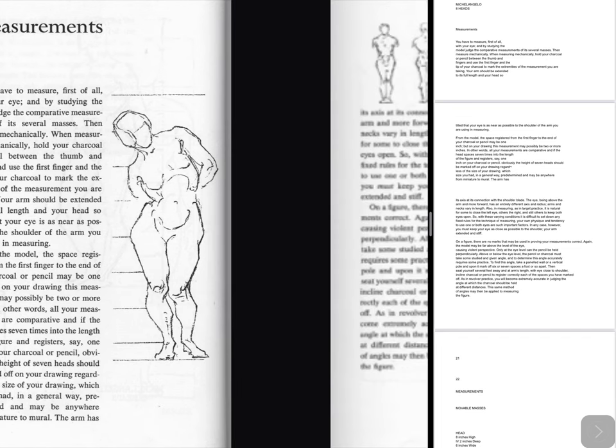The arm has its axis at its connection with the shoulder blade. The eye, being above the arm and more forward, has an entirely different axis and radius. Arms and necks vary in length. Also, in measuring, as in target practice, it is natural for some to close the left eye, others the right, and still others to keep both eyes open. With these varying conditions it is difficult to set down any fixed rules for the technique of measuring. In any case, you must keep your eye as close as possible to the shoulder, your arm extended and stiff. The model may be far above the level of the eye, causing violent perspective. Only at the eye level can the pencil be held perpendicularly. To find the correct angle, take a panelled wall or a vertical pole and upon it mark off six or seven spaces, seat yourself several feet away and at arm's length, and incline charcoal or pencil to register correctly each of the spaces you have marked off. As in revolver practice, you will become extremely accurate in judging the angle at which the charcoal should be held at different distances.